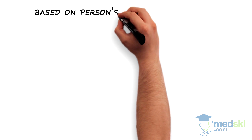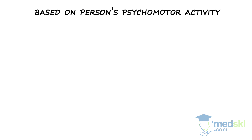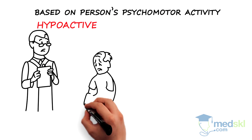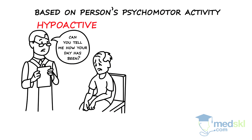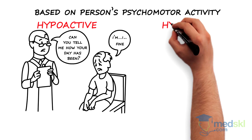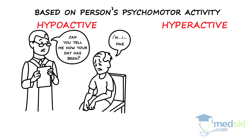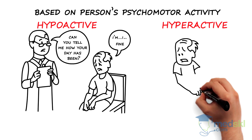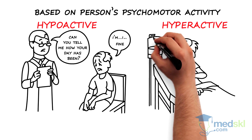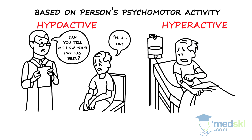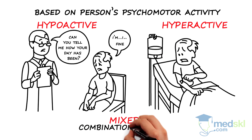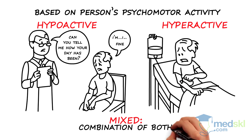Delirium is categorized based on psychomotor activity. It can be hypoactive, with sluggishness and impoverished thinking; hyperactive, with agitation and intense emotions; or mixed-level activity, including combinations of the other two.